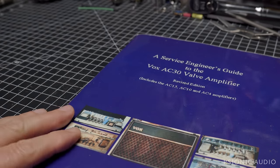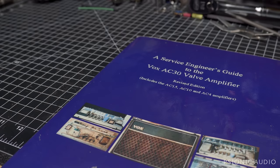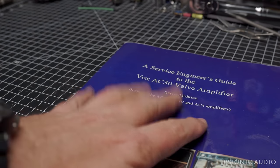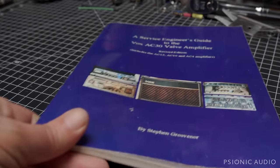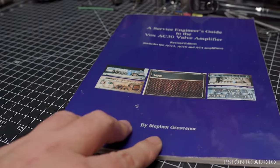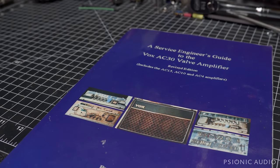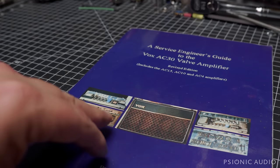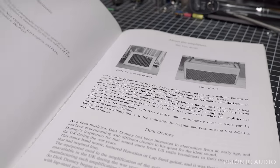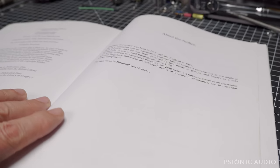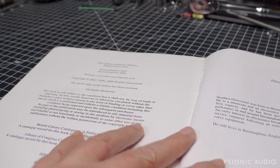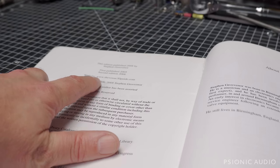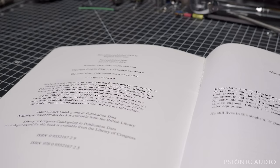In last Saturday's live stream, someone was asking about AC-15 and AC-30 and AC-10 schematics because the ones online are rarely legible. And I mentioned this wonderful book, A Service Engineer's Guide to the Vox AC-30 Valve Amplifier Revised Edition includes the AC-15, AC-10 and AC-4 Amplifiers by Stephen Grosvenor. But in that video, in addition to praising this book, I also said you can get it on Amazon or wherever online. Well, Stephen contacted me to thank me for mentioning his book and saying that he enjoys my videos, which is very nice. I enjoy his book. But he wanted me to mention when I got a chance that it is available only from his website, www.thevoxac30guide.com. And I will put that in the description below.